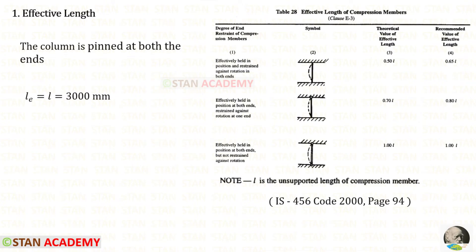First we have to find the effective length. In the question it is given that the column is pinned at both ends. We have to select this condition: effectively held in position at both ends but not restrained against rotation. Here the effective length is 1.0L, so the effective length and the unsupported length will be the same, that is 3000 millimeters.